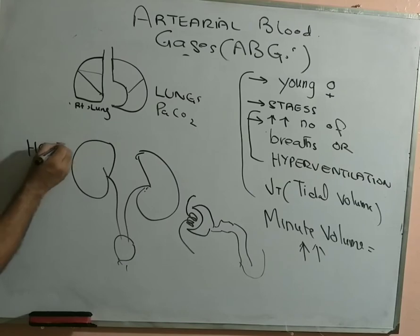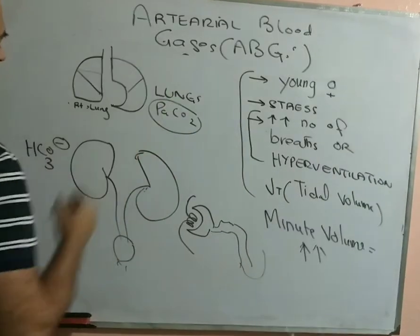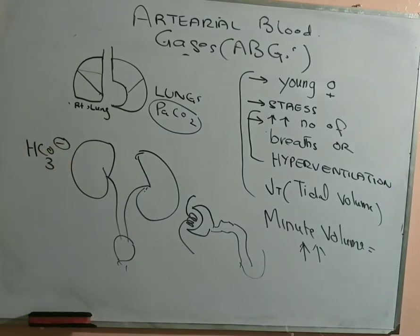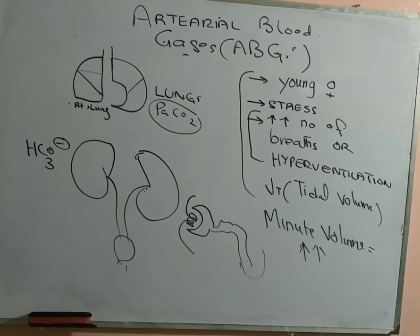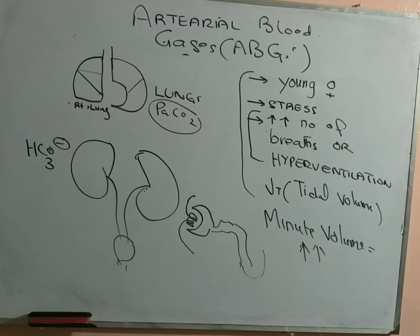When there is a problem because of one entity of the ABGs, the other component will change its behavior to decrease the negative effect of the primary problem on the pH. In cases of respiratory alkalosis, carbon dioxide went low due to higher minute ventilation, causing respiratory alkalosis. Now bicarbonate, through the kidneys, will change its behavior to cause acidosis — to counteract the alkalosis. Bicarbonate will decrease, which will cause metabolic acidosis, thus compensating the effect of respiratory alkalosis on the pH.